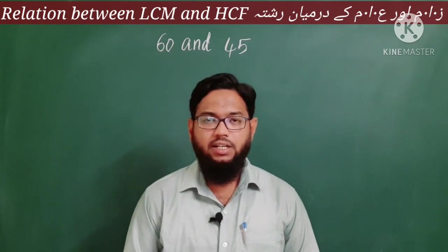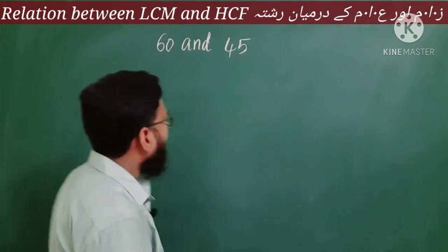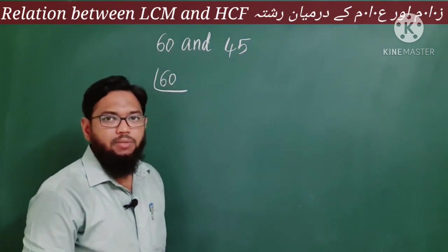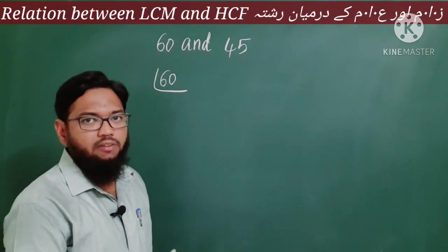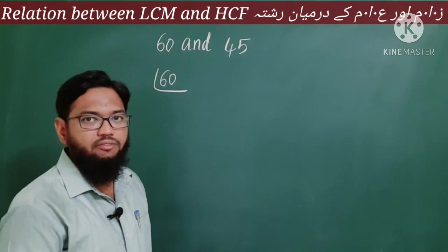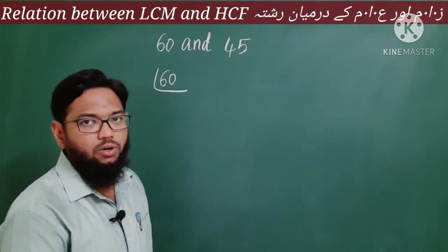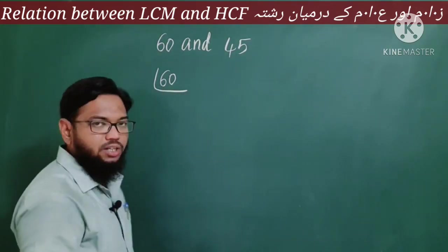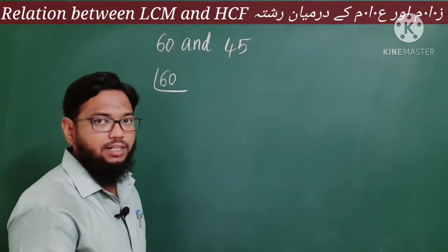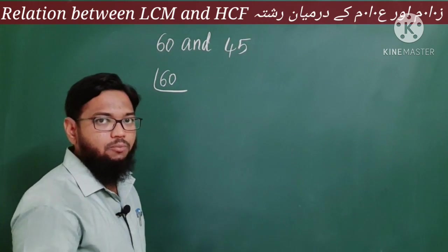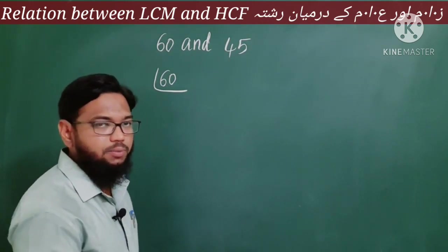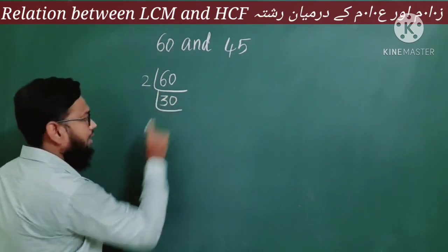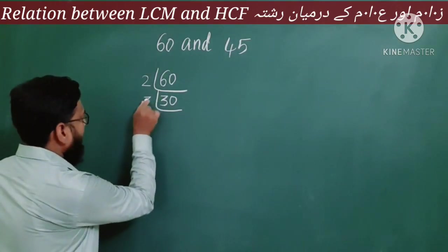So now let us find the LCM and HCF of 60 and 45 by the prime factorization method. First we take the number 60 and prime factorize it. As you can see, 60 has a zero in the units place, so from the rules of divisibility, if the units place has zero, it is divisible by 2. So 60 is divisible by 2. Two threes are six, so we write 30 next.